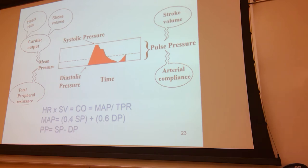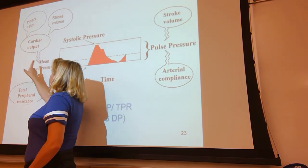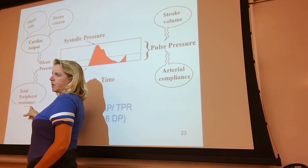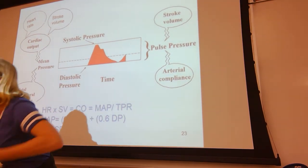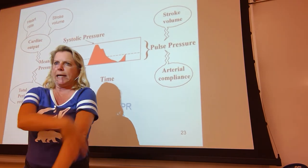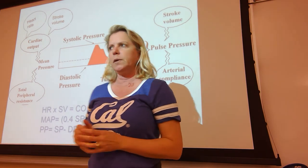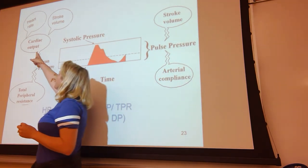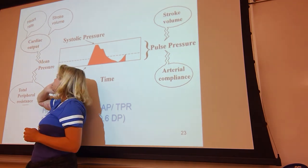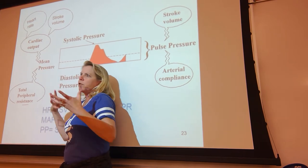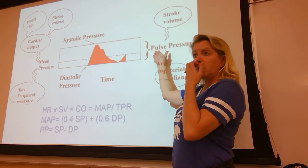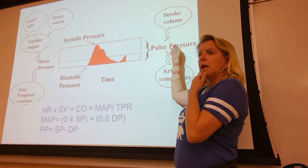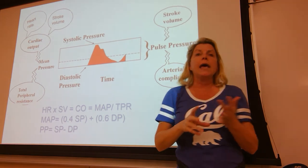To put these concepts in a big concept map: Flow equals change in pressure divided by resistance. When we speak of resistance we're talking about total peripheral resistance — TPR — resistance everywhere outside the heart. Cardiac output can be calculated by heart rate times stroke volume. Mean arterial pressure is the pressure gradient — the difference between systolic and diastolic is pulse pressure, which is the driving force. Pulse pressure is impacted by stroke volume and arterial compliance.